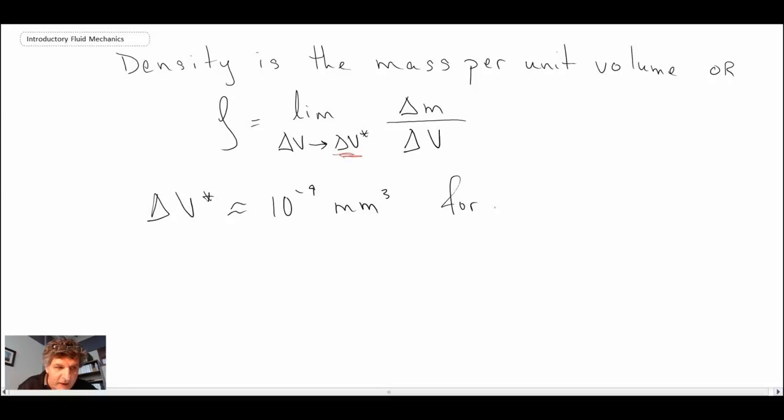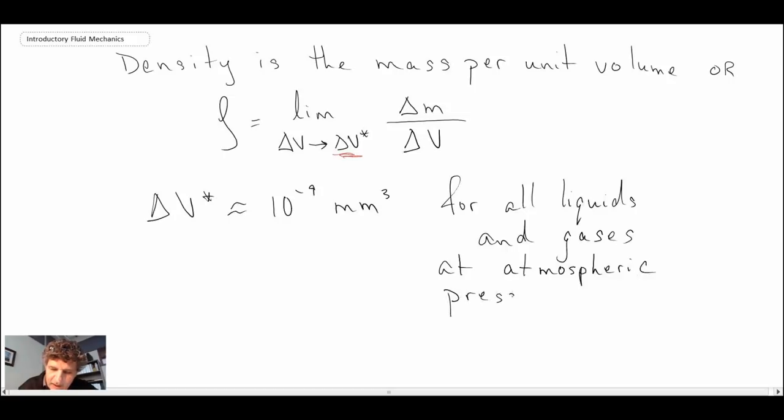So that's kind of a rule of thumb or a value for all liquids and gases at atmospheric pressure. If you're dealing with gases at lower pressures, what will happen is the mean free path, that is the spacing between the collisions of those balls or the molecules we looked at in the kinetic theory, it becomes larger and larger. And consequently, the volume that you would need to sample would become larger. So let's take a look at this with a diagram.